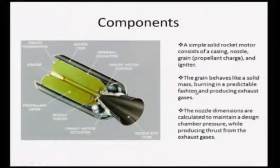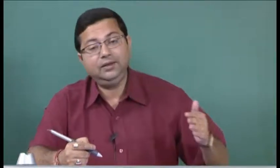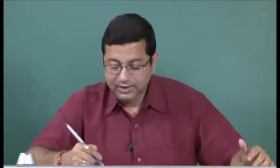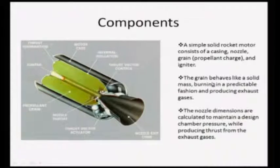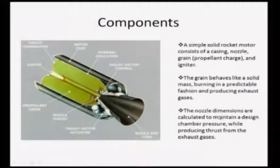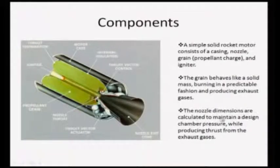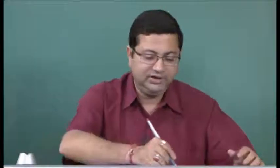The grain behaves like a solid mass which burns in a predictable fashion. The grain is designed so that it burns in a predictable manner, thus producing the exhaust gases. The nozzle dimensions are calculated to maintain a design chamber pressure P_c0, which will ensure the required pressure and temperature is maintained while producing thrust from the exhaust gases.